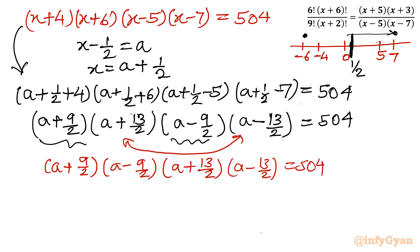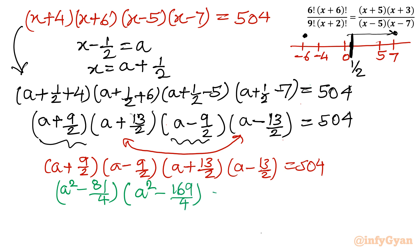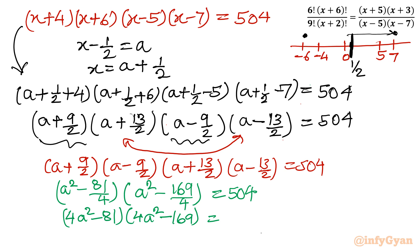Taking LCM, I write (4a² − 81)(4a² − 169) = 504 × 16, which equals 8064. Expanding and simplifying the left-hand side gives the quartic equation: 16a⁴ − 1000a² + 5625 = 0.